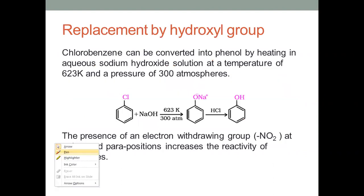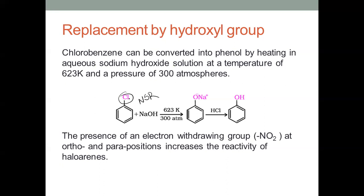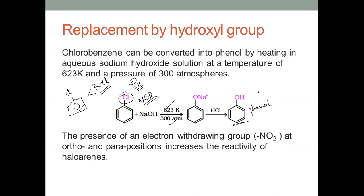When we are seeking the answer for this question, this chlorobenzene does undergo nucleophilic substitution reactions. That means this chloro group gets substituted by this OH⁻ group. Since one nucleophile is being substituted by another — that is Cl⁻ is being substituted by OH⁻ — we call it a nucleophilic substitution reaction. This Cl is being substituted under very drastic conditions: 623 Kelvin temperature and high pressure — 300 atmospheric pressure — resulting in the formation of phenol, where Cl is substituted by OH.